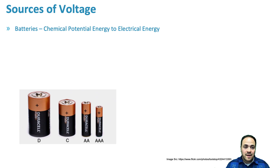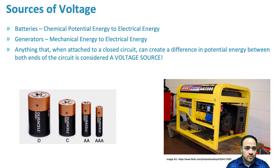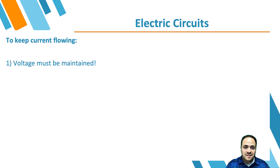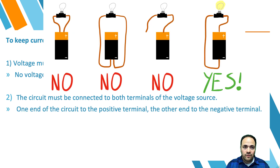When we talk about voltage sources, we have things like batteries, which convert chemical potential energy to electrical energy, and generators, which convert mechanical energy to electrical energy. Anything that, when attached to a closed circuit, creates a difference in potential energy per unit of charge between the ends of the circuit is a voltage source. To keep current flowing, voltage must be maintained — no voltage is like a flat ramp, and charge won't move without a potential difference. The circuit must be connected to both the positive and negative terminals of the voltage source; otherwise there's no potential difference.